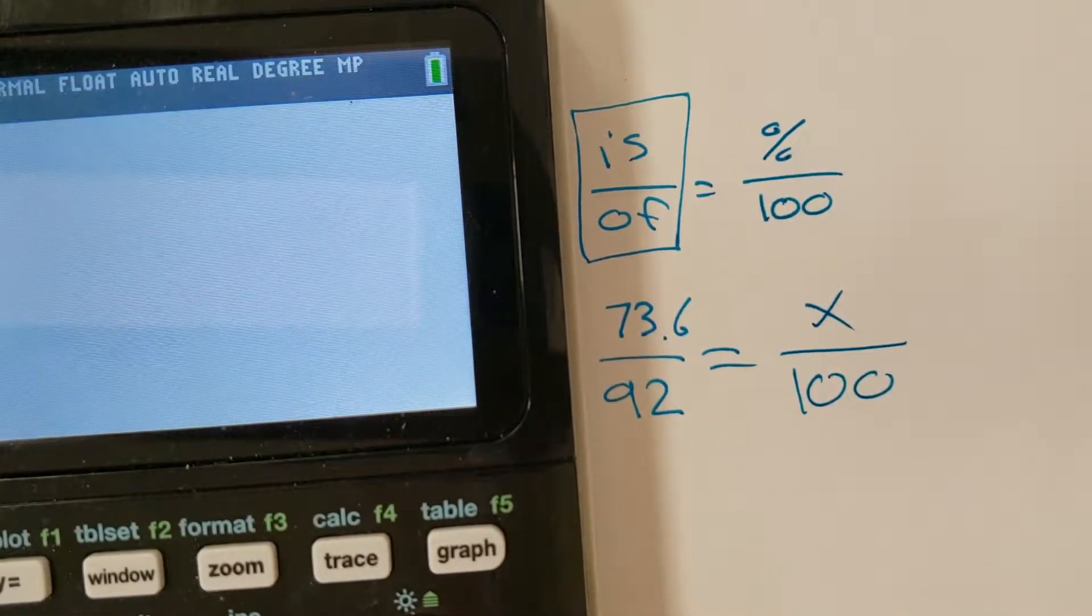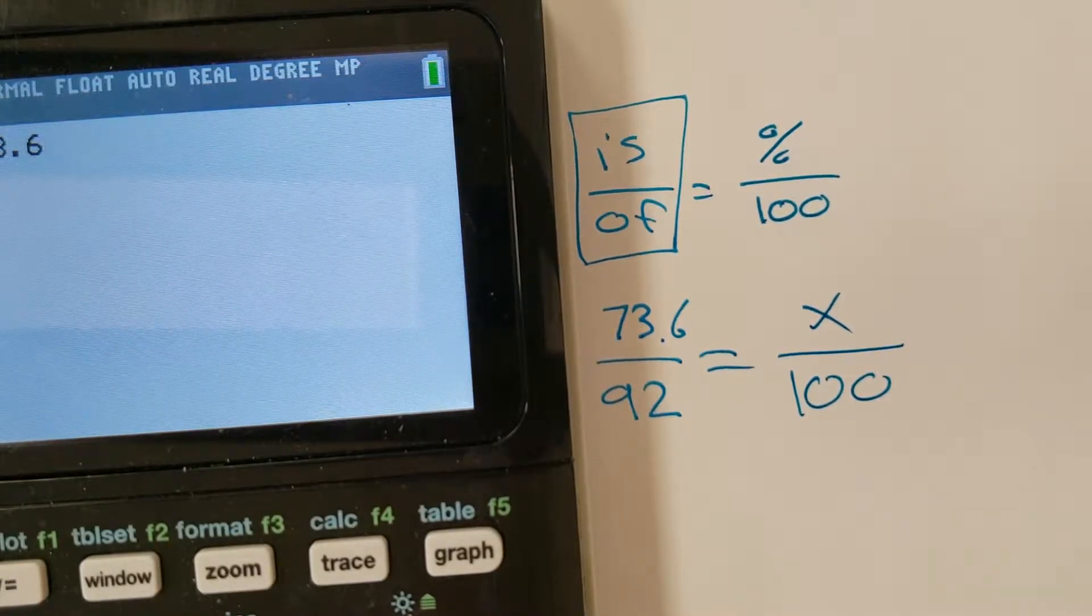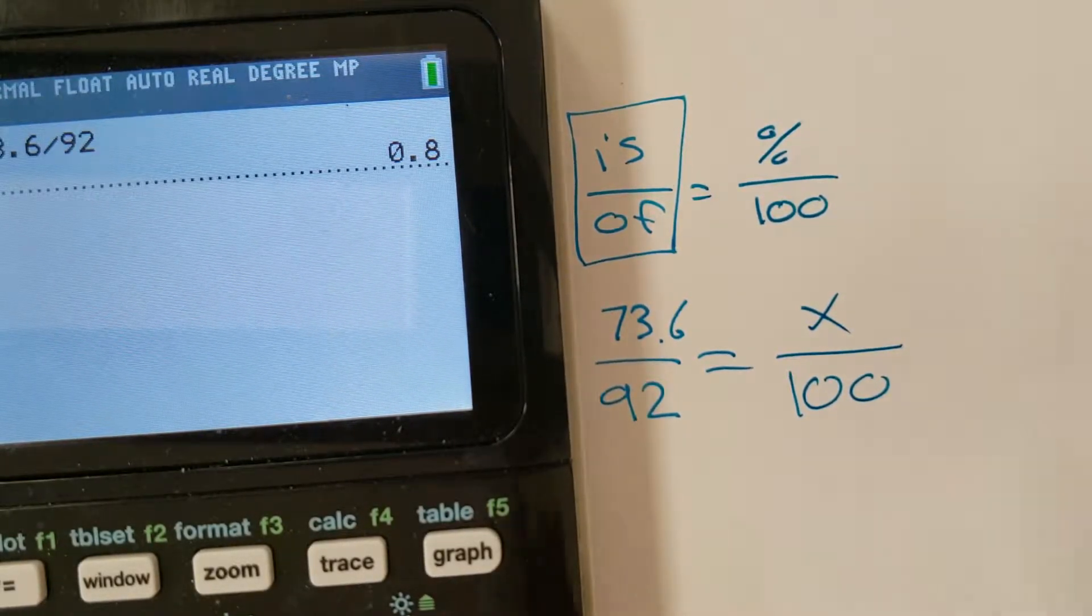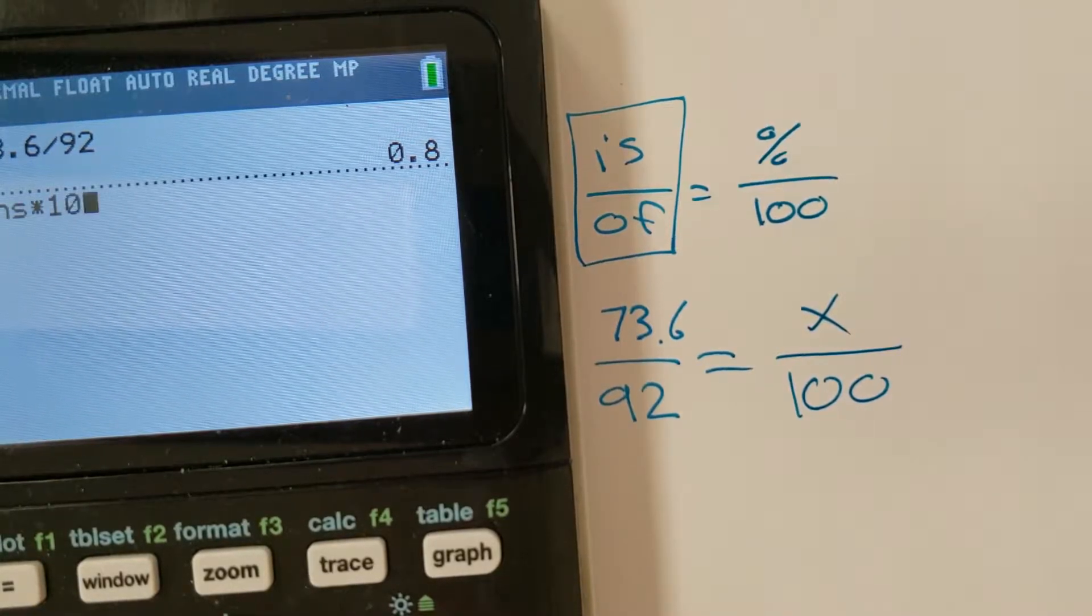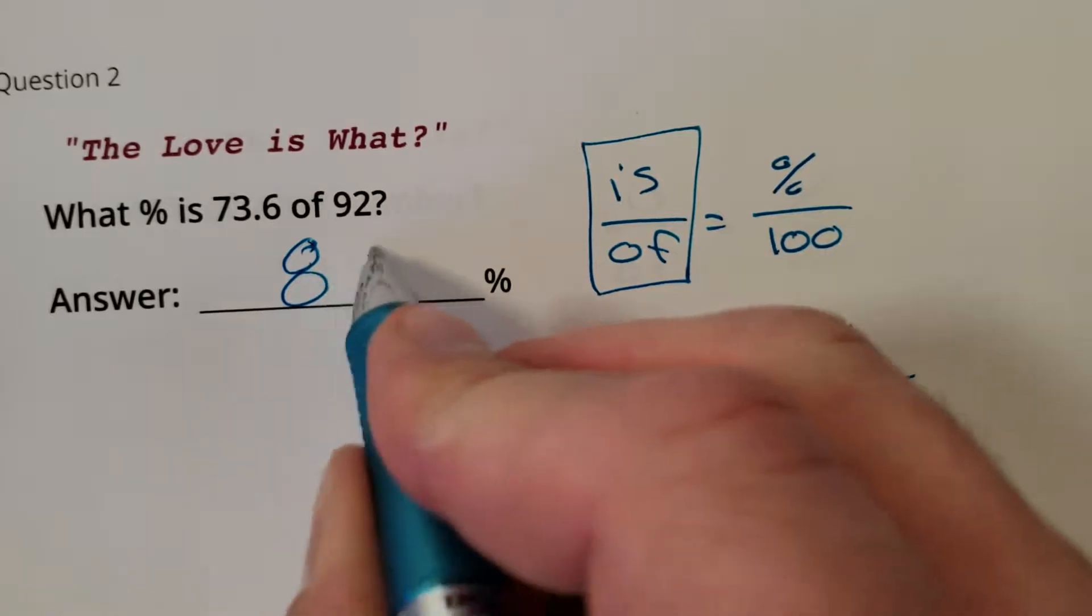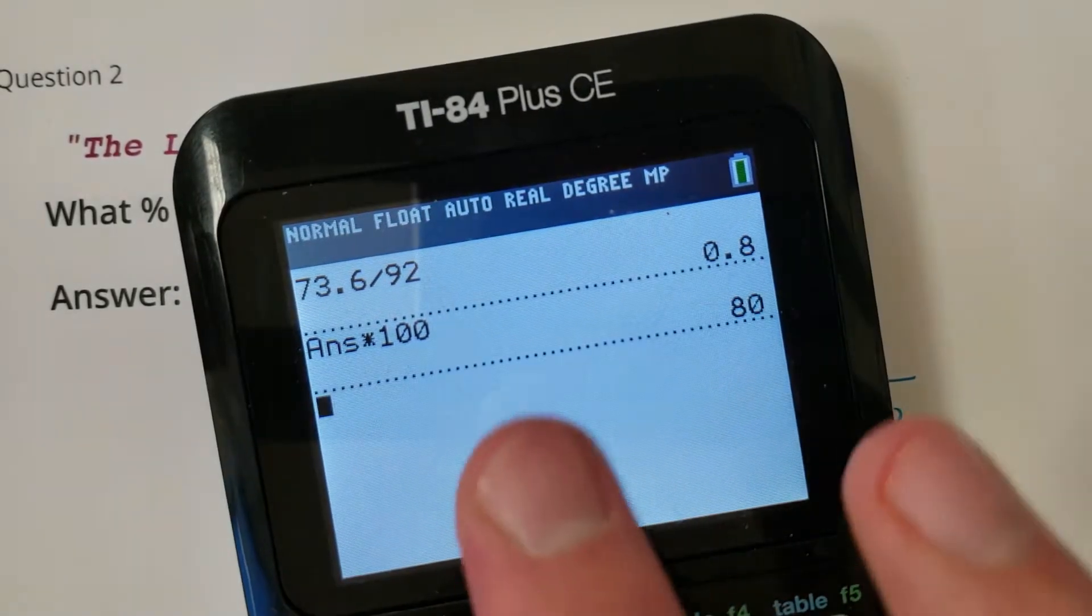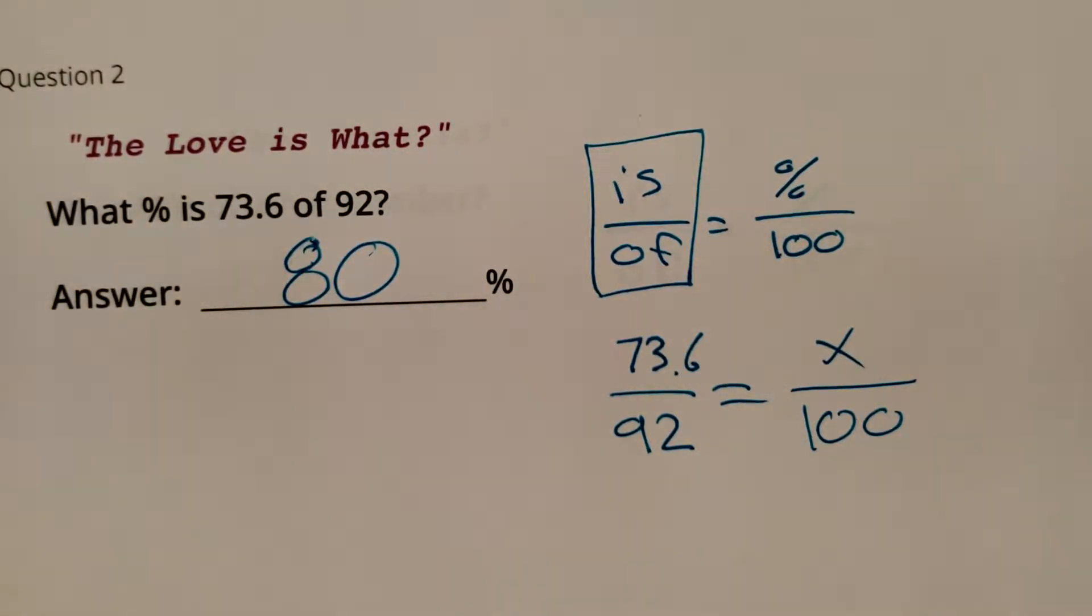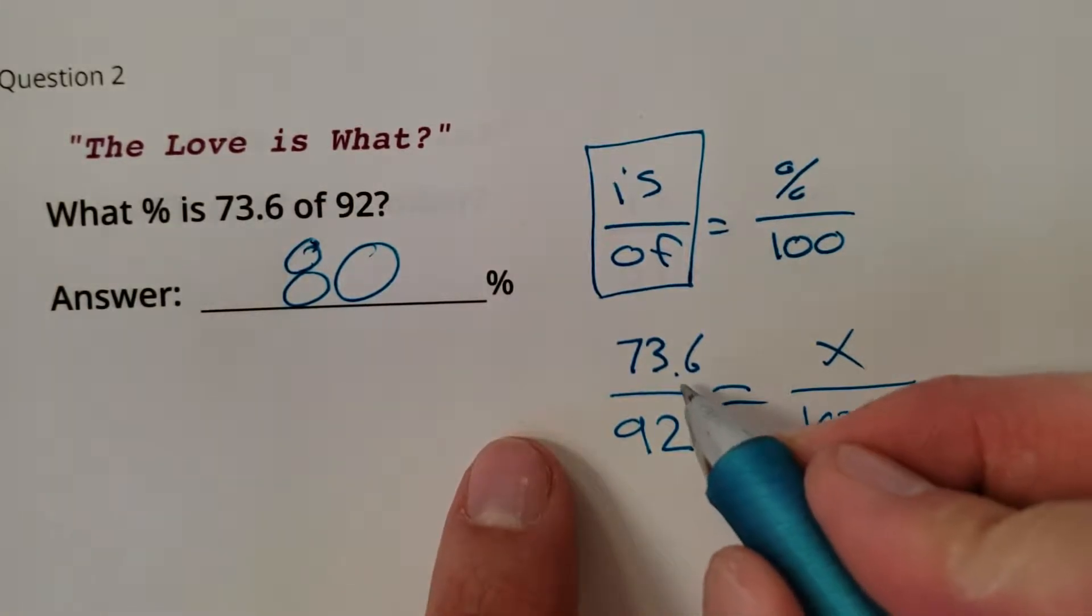So 73.6 divided by 92 is 0.8. We all know that's going to be 80%. Make sure you're careful and you convert your decimal to a percent. Remember the decimal doesn't work, but the percent works when answering questions.